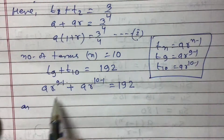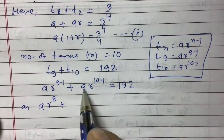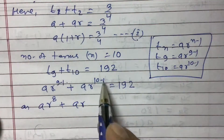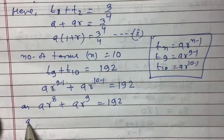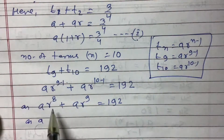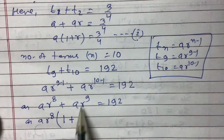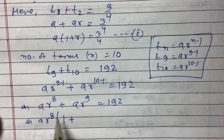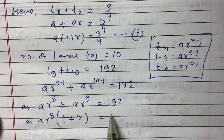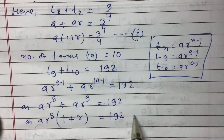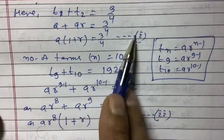We can write ar⁸ + ar⁹ = 192. Here a and r⁸ are common, so factoring gives ar⁸(1 + r) = 192. This is Equation 2. Now we need to solve Equation 1 and Equation 2 to get the value of r.